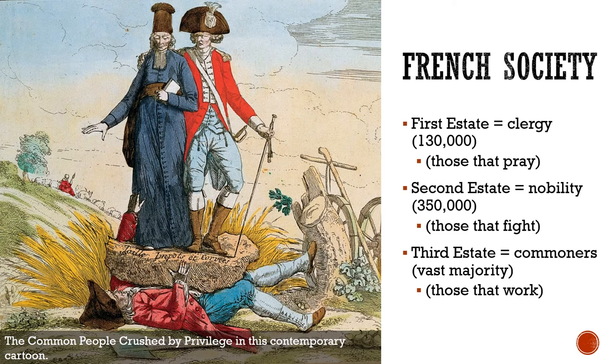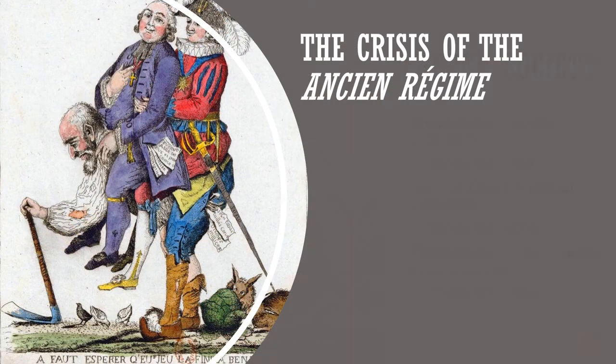Contemporary cartoons illustrated this unfairness vividly. One shows the common people being crushed under a heavy rock on which the noble and clergy stand. Another shows the Third Estate carrying both the rotund noble and a member of the clergy on his back. These cartoons demonstrate that many people in French society thought the system was completely unfair.